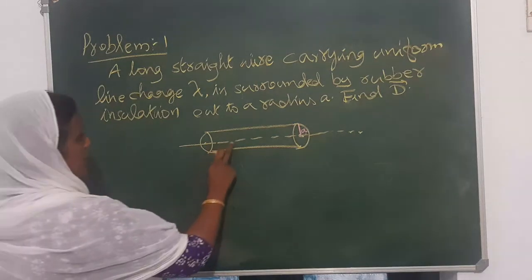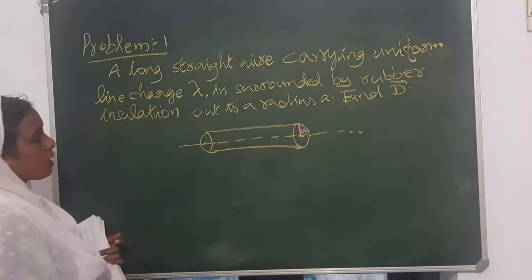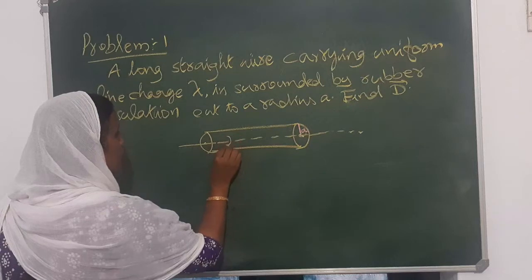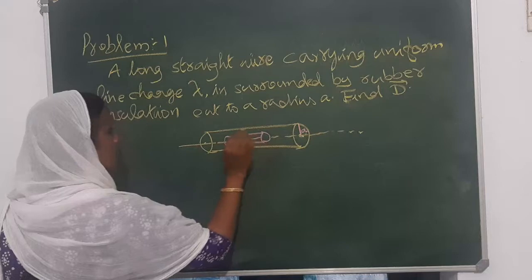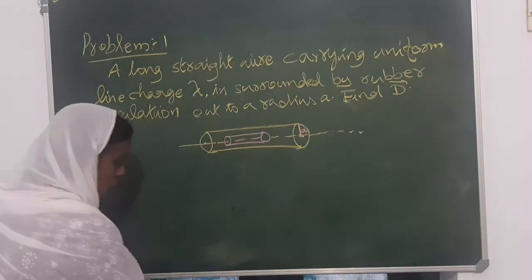And there is a line charge density lambda. Now we can assume a Gaussian cylinder here like this. Gaussian cylinder.